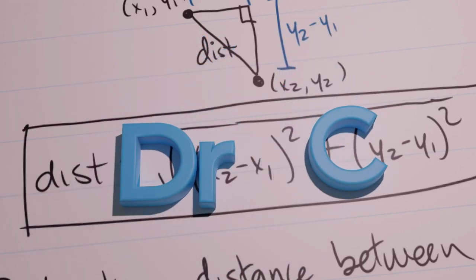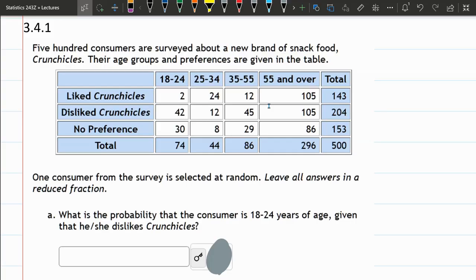We're given a table, and this covers people's opinion on Crunchies, a new snack food. We have their ages and whether they liked or disliked the food or had no preference. We also get a bunch of totals, so it's a lot more information than we're probably going to need.